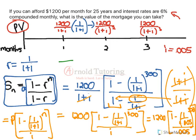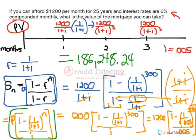Punch that into the calculator — and with any luck we get the same answer as we did using the TVM solver. And there it is: $186,248.24. So this is your general annuity formula for the present value of an annuity where payments are made at the end of each time period. It comes from the sum of a geometric series, and now we can see how it's derived. Hopefully this is helpful in seeing where that formula comes from, knowing what numbers to plug in, and tying that back to the calculator. Thanks so much — you can always send us more questions at info@arnoldtutoring.com.